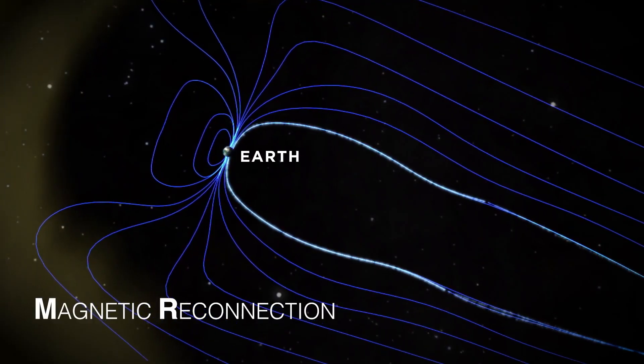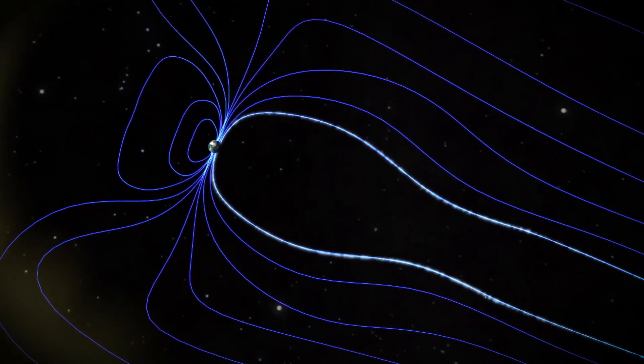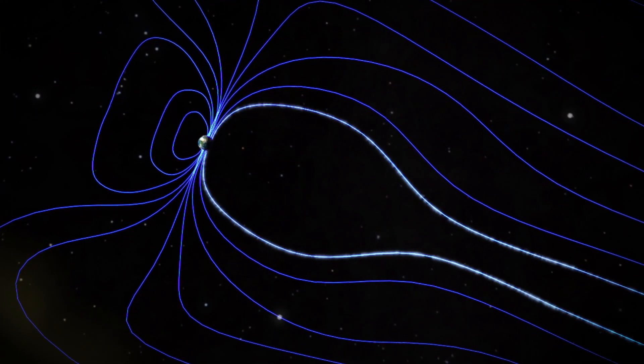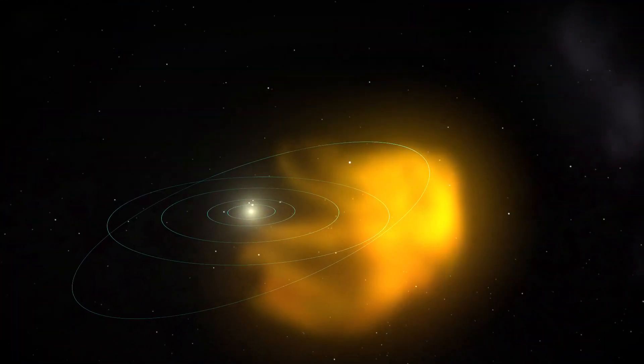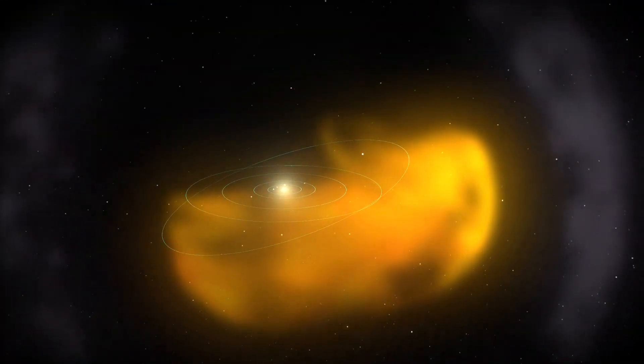Magnetic reconnection occurs where magnetic field lines are constantly shifting. When the lines become tangled, they explosively snap and realign. This transfers energy and sends nearby plasma particles flying through space.